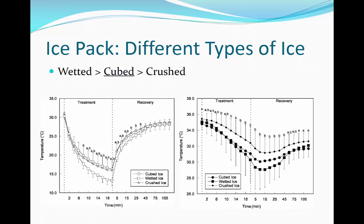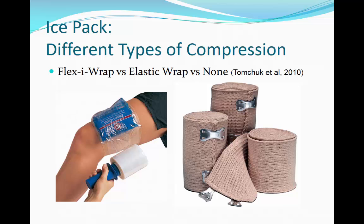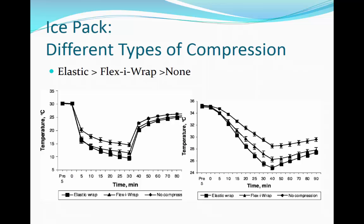Patients were then followed for 100 minutes to document tissue re-warming. An additional study examined the different types of compression resulting in decreased intramuscular temperature. The study by Tomchak and colleagues, published in 2010, examined the use of flexiwrap, elasticwrap, and no compression on intramuscular temperature at the gastrocnemius muscle. Each patient was subjected to three treatments randomly. The study demonstrated that patients saw the greatest temperature change in the elasticwrap compression group, followed by flexiwrap and then no compression. The difference between elasticwrap and flexiwrap was not massively different compared to the no compression group.